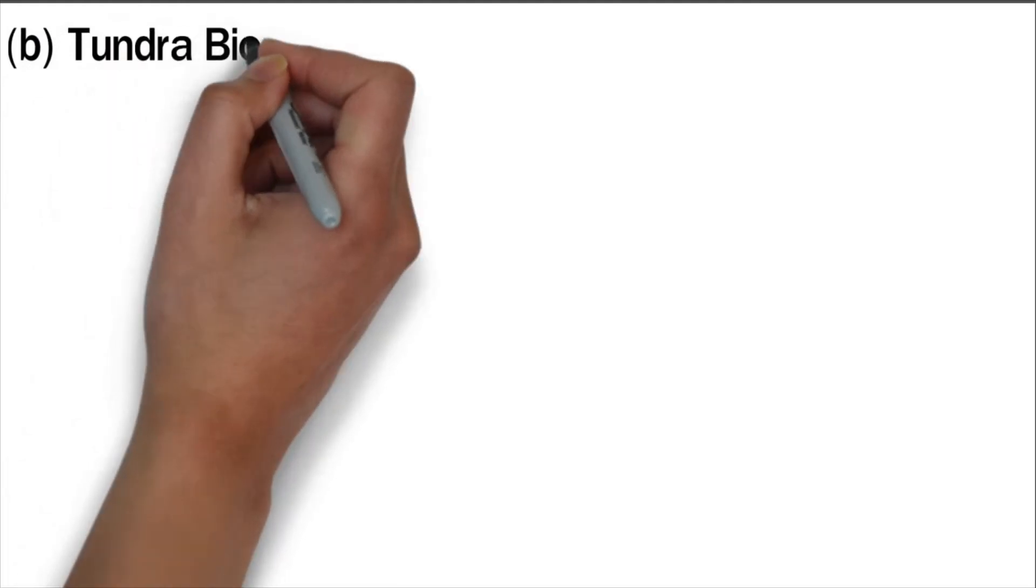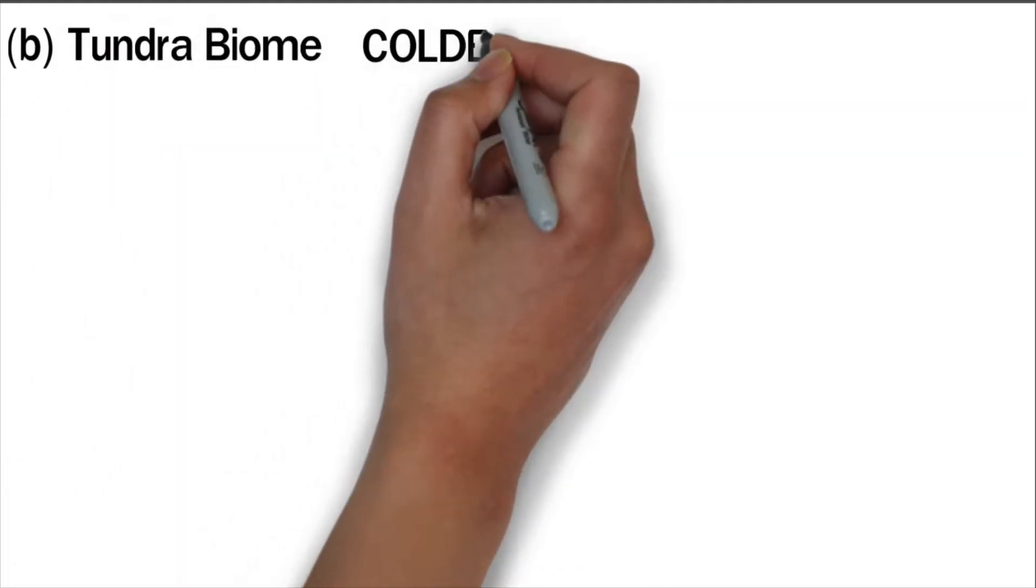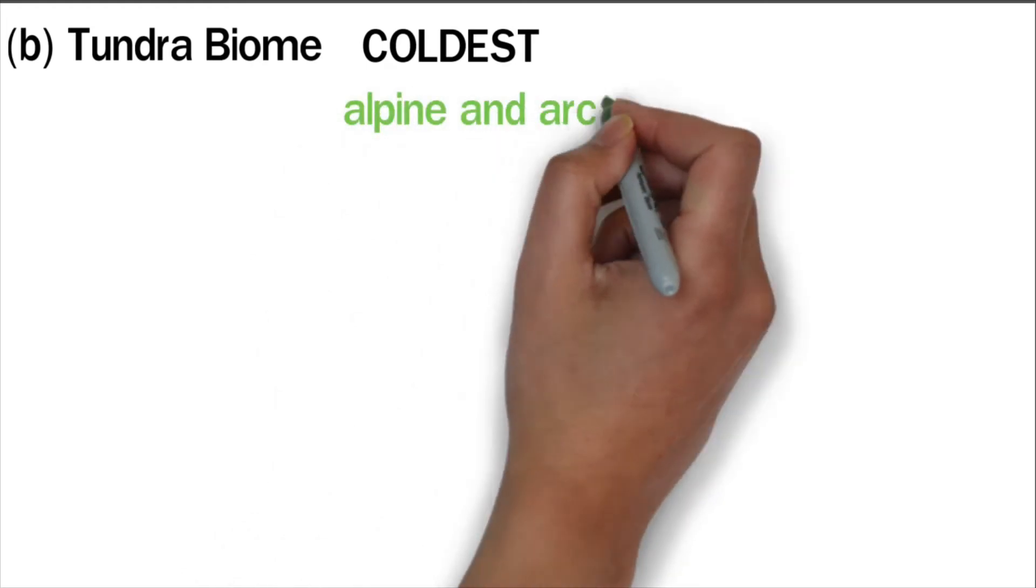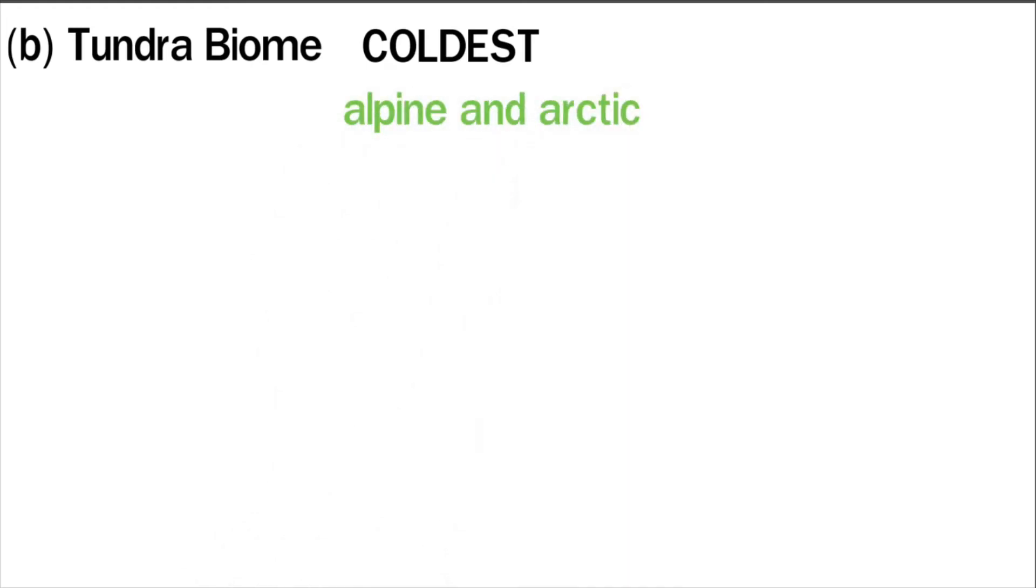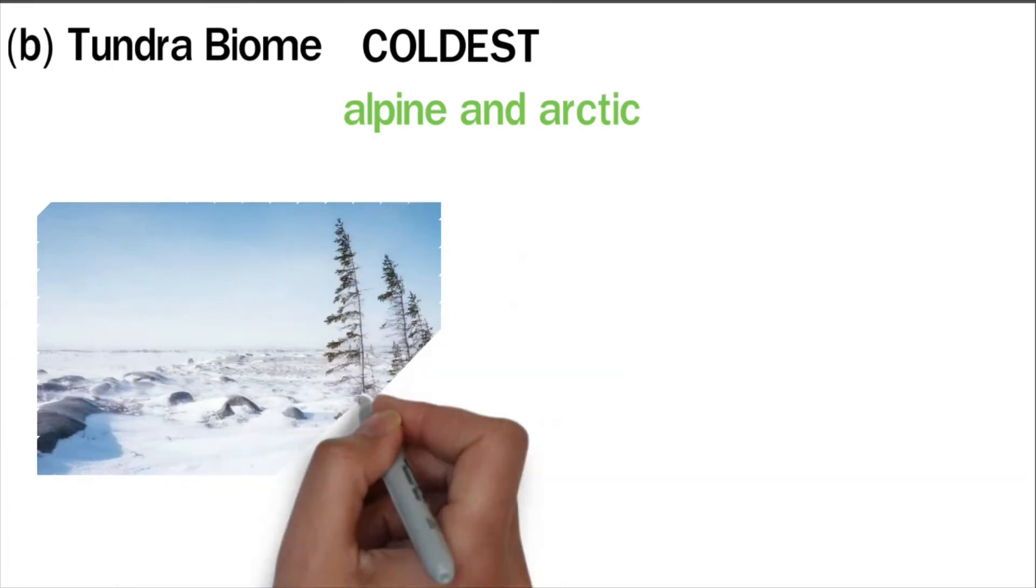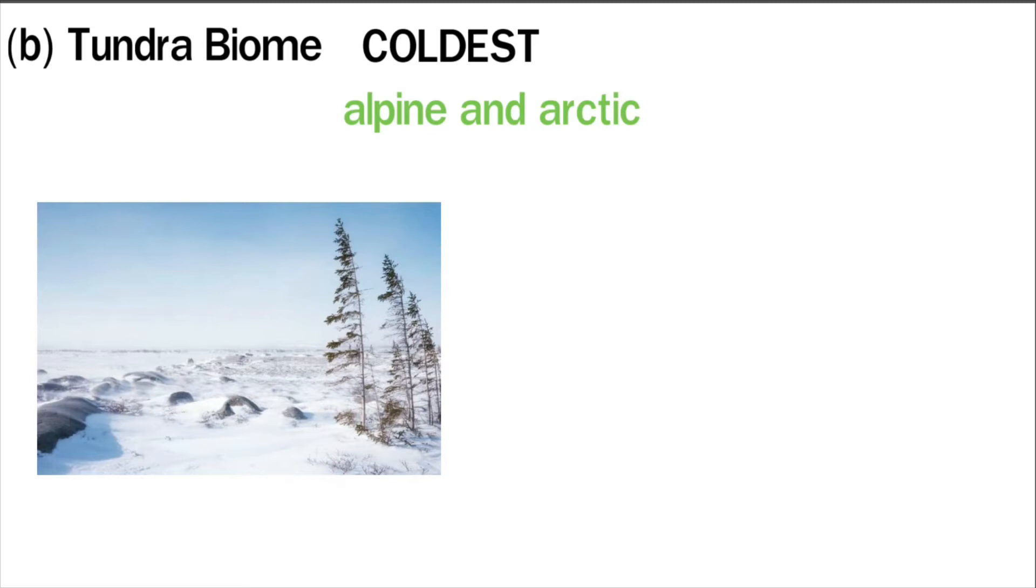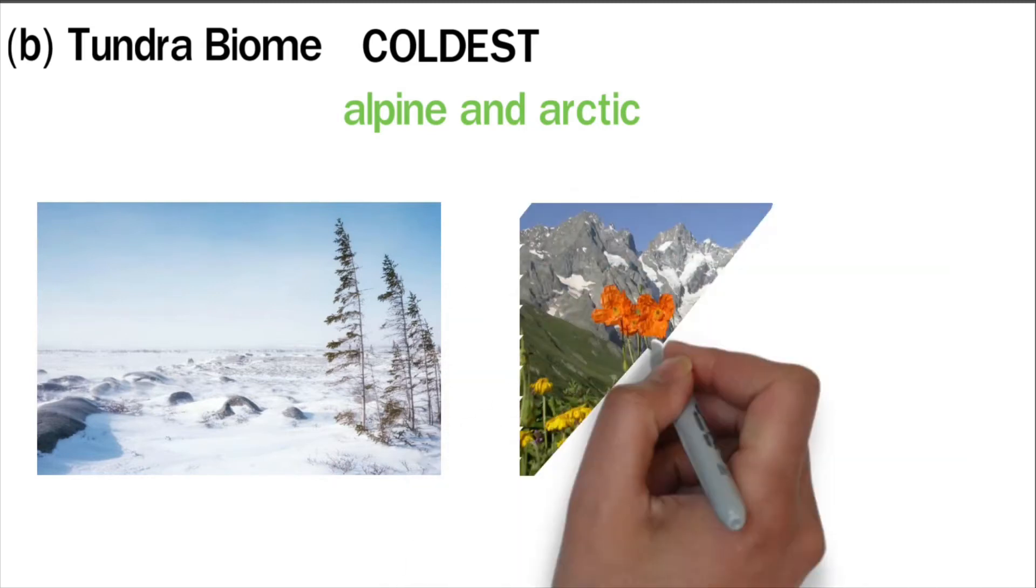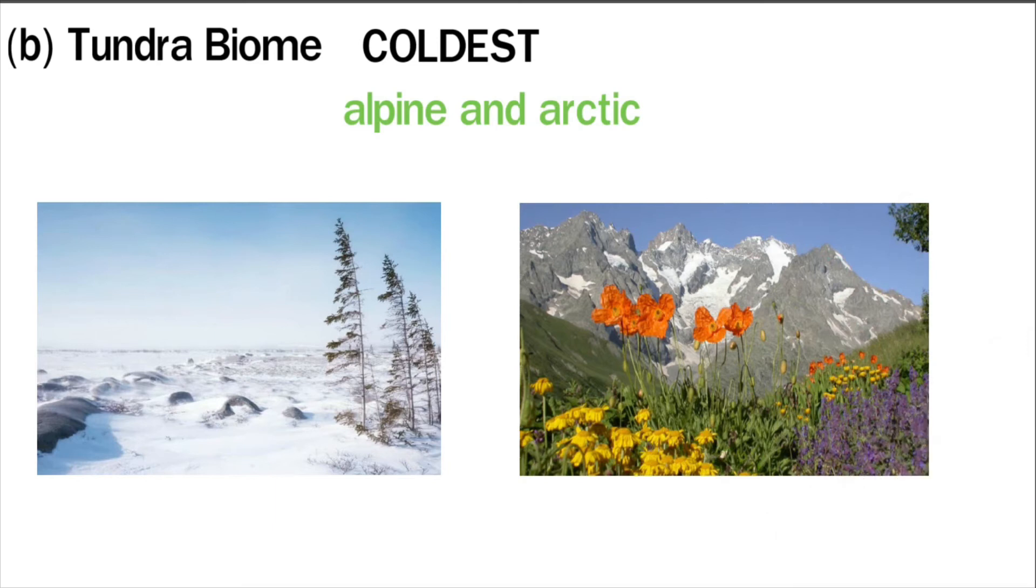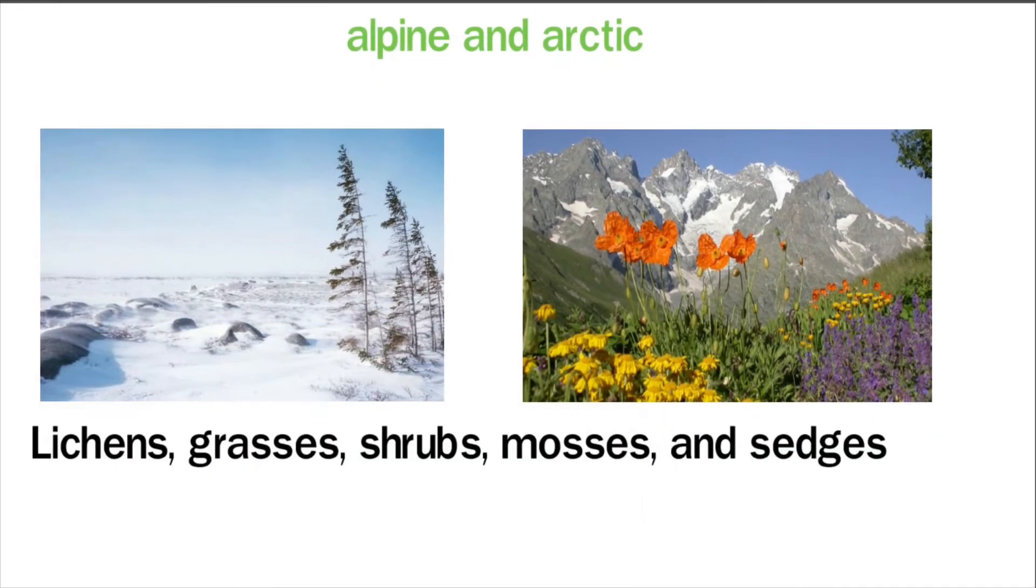Tundra biome: Tundras are the coldest terrestrial biomes. This biome is split into alpine and arctic biomes. Arctic biomes are found in the nethermost region of the earth and are defined by extremely low temperature conditions. They also experience poor drainage. Alpine biomes are located in mountainous regions and have better drainage than arctic biomes. Tundra biomes have few to no plants. Lichens, grasses, shrubs, mosses, and sedges are some of the most common plants found in the tundra biome. Polar bears, arctic foxes, reindeer, and arctic hares are good examples of tundra biome animals.